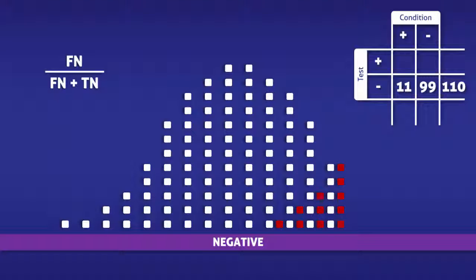Now all that's left to do is enter the data into the equation. In doing so, we find that the false emission rate is 11 over 110, which is 10%.